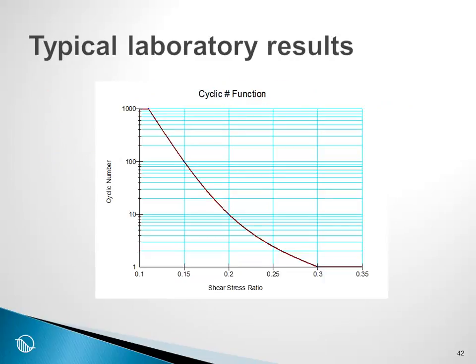The cyclic stress ratio is determined for the dynamic analysis, and then this has to be correlated with laboratory tests. From laboratory tests we get the number of cycles that are required to cause liquefaction at a particular shear stress ratio level. For example, a shear stress ratio, cyclic stress ratio of 0.2 for this particular soil would require 10 cycles to cause liquefaction.